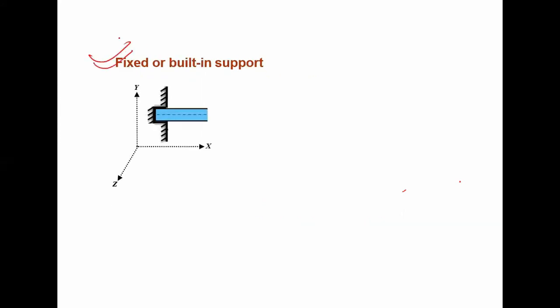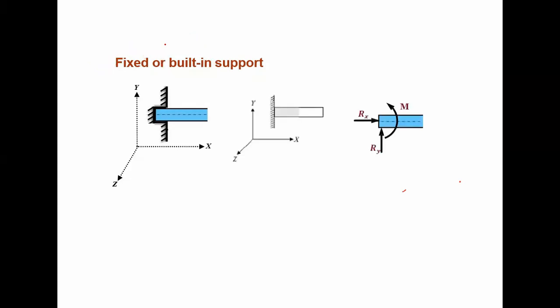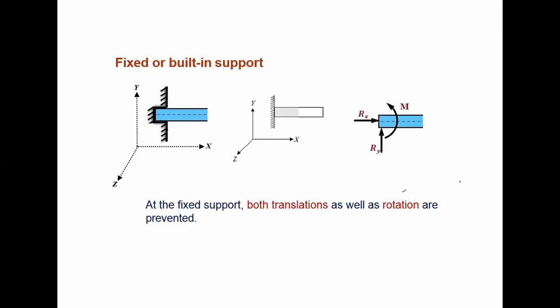Another very important type of support is the fixed support, also called built-in support. The term 'built-in support' is not very common, so please remember it represents the fixed support. The fixed support provides both resistance against translation as well as resistance against rotation. It will prevent both kinds of motion — translation as well as rotation. So at the fixed support, both translations and rotations are prevented.